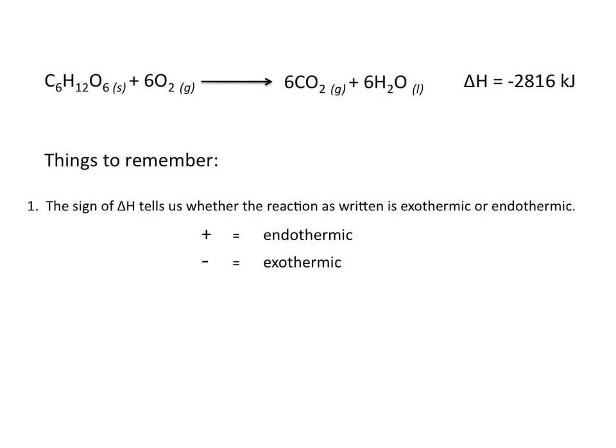So the sign of delta H tells us whether the reaction as written is exothermic or endothermic. A positive value of delta H means the reaction as written is endothermic, whereas a negative value of delta H means the reaction as written is exothermic.